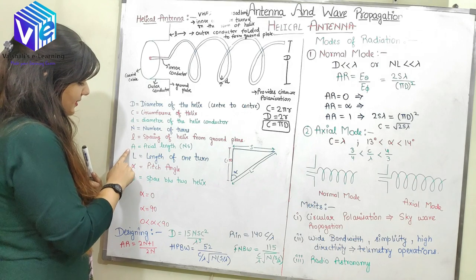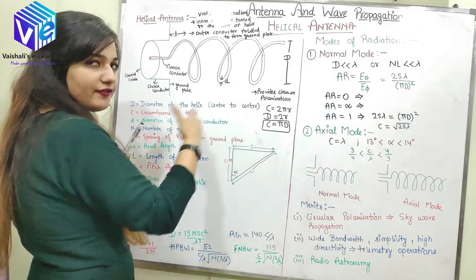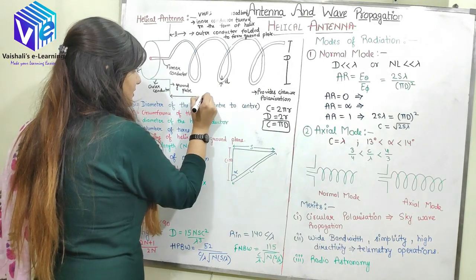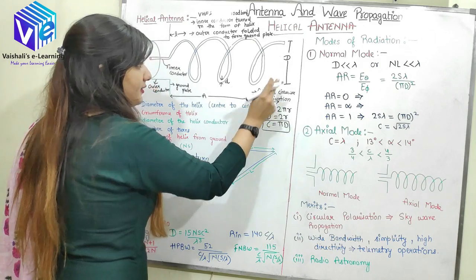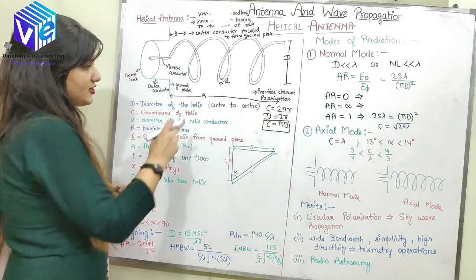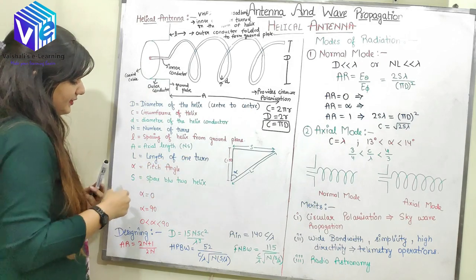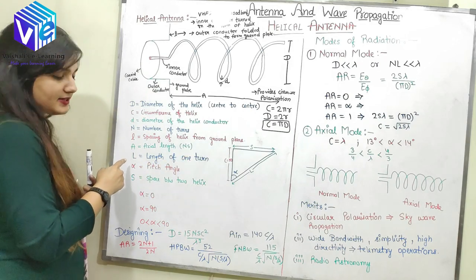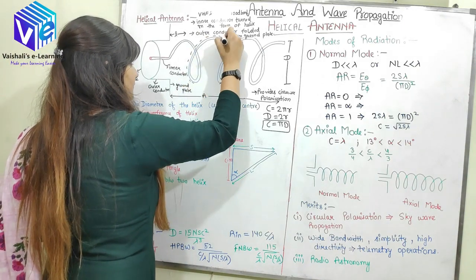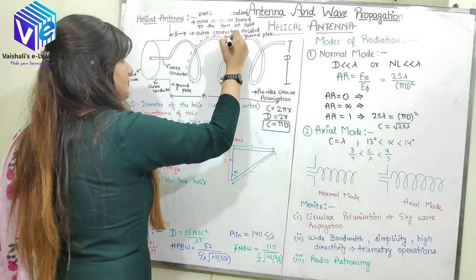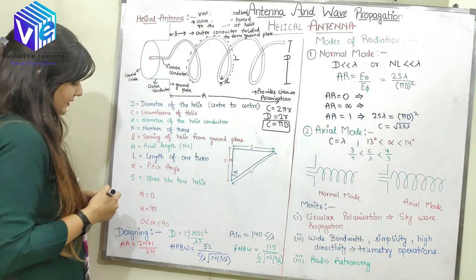Capital A is the axial length, which is the total length of the antenna. Capital L is the length of one turn. Applying Pythagoras theorem, L² = S² + (πD)². From here I can find out L as the square root of S² + (πD)².